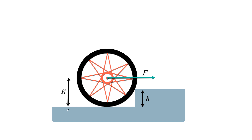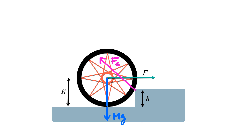Here's our problem. We have a wheel with radius r and a curb of height h. I'm applying a horizontal force to the right. The wheel has a mass m, so there's a weight mg acting at the center of mass. The wheel also comes in contact with the corner of the curb, so there's a contact force fc. We'll consider the case where the wheel is just starting to lift, slightly above the surface — so there's no longer a normal force from the ground.